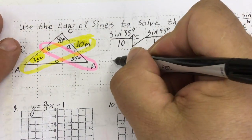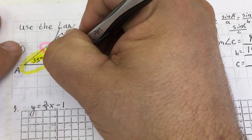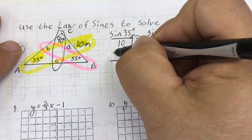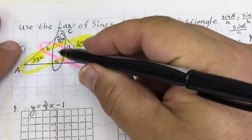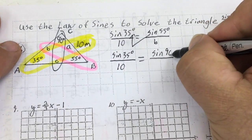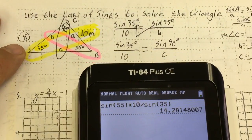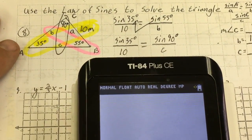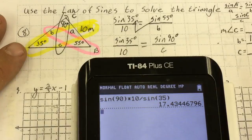I set up another proportion to find side c. Sine of 35 degrees over 10 equals sine of 90 degrees over c. Using the calculator: sine of 90 degrees times 10 divided by the sine of 35 degrees. This gives me 17.4.